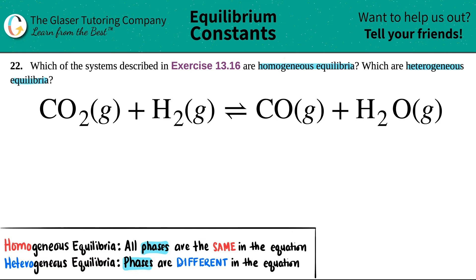In this case, I've got a gas. In this case, I've got a gas. I've got another gas and I've got another gas. These are all the same exact state. I have no solids, I've got no liquids, I've got no aqueous. So all these phases are exactly the same. This is a homogeneous equilibria.